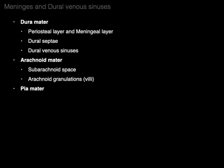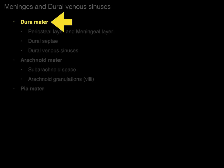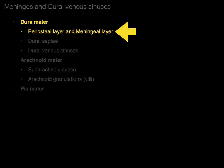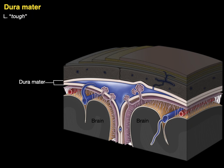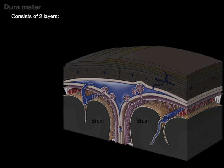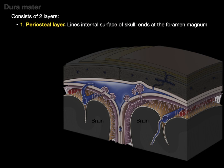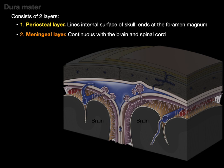Here are all the things with the dura, arachnoid, and pia maters that we're going to talk about. We'll start with the dura mater. The dura mater is the most superficial layer of the meninges. The Latin for tough is dura and the Latin for mother is mater, so it literally means the tough mother — because the dura mater consists of dense irregular collagenous connective tissue; it's very tough. There are two layers: a periosteal layer that lines the internal surface of the skull, and the meningeal layer that's continuous with the brain and spinal cord.